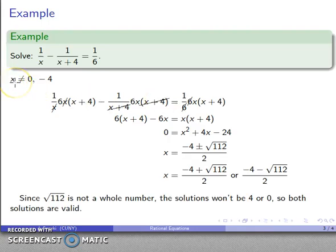Now, remember, I'm not ever going to be allowed to use 0 or negative 4 as a solution. So I have to worry that one of our solutions, one or both solutions, could be my forbidden values, but square root of 112 is not a whole number. It's an irrational number. So neither of these two are going to be our forbidden values, so both of these solutions are valid.